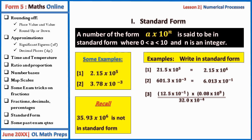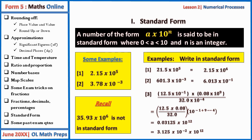Example three involves simplifying an expression with numbers in standard form. We separate the numerical coefficients from the powers of ten. Simplifying the coefficients: 12.5 × 0.08 ÷ 32.0 = 0.03125. For the powers: 10⁻¹ × 10⁹ ÷ 10⁻⁴ = 10¹². So the result is 0.03125 × 10¹². Converting to standard form: 3.125 × 10⁻² × 10¹² = 3.125 × 10¹⁰.